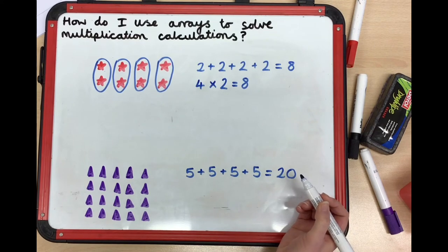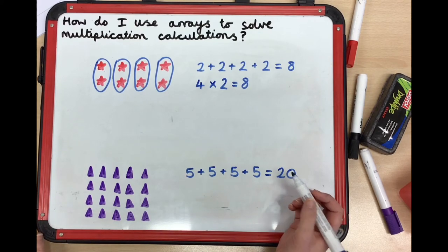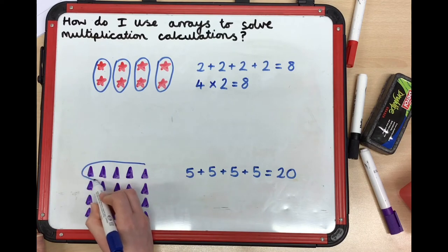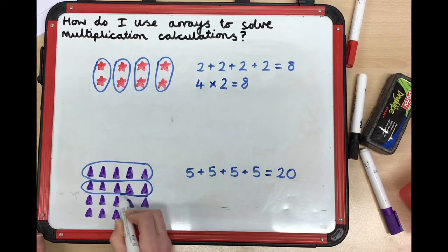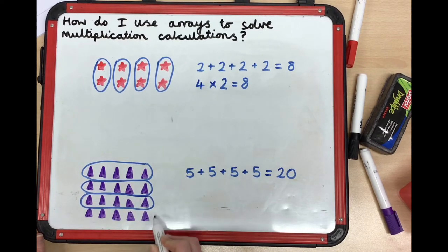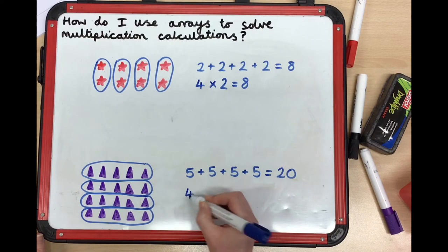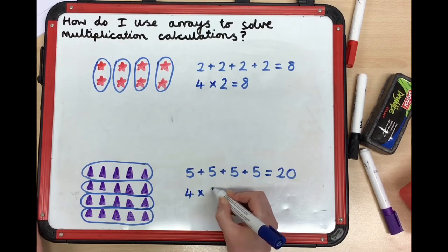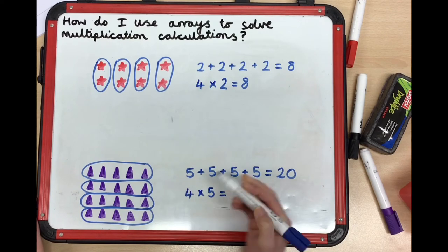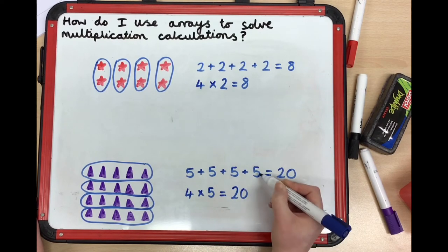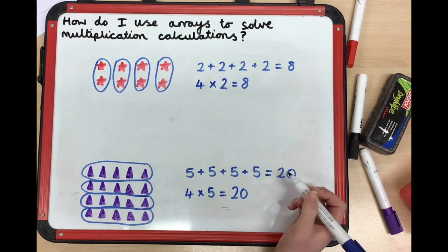Now let's have a go at writing the multiplication. I know I've got groups of five, but how many of those groups of five do I have? Let's count: one group, two groups, three groups, four groups of five. So four times five equals — count to check — five, ten, fifteen, twenty. My repeated addition equals twenty, and my short way of writing it should also equal twenty.